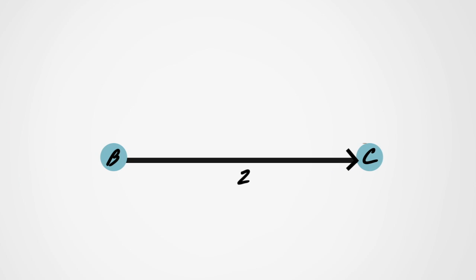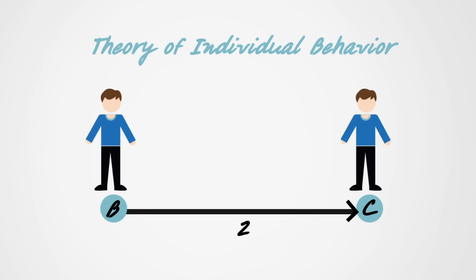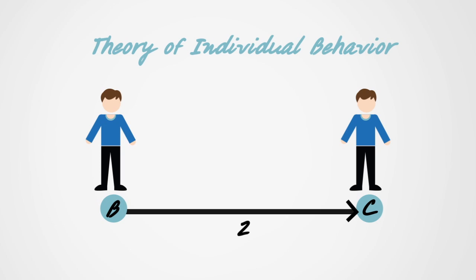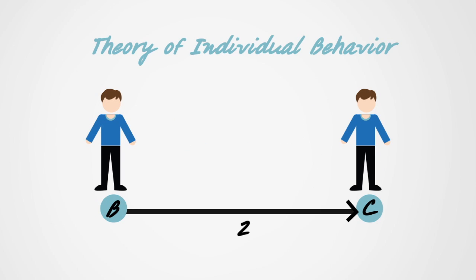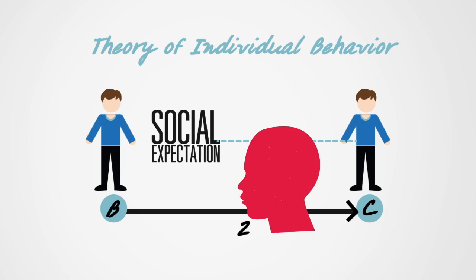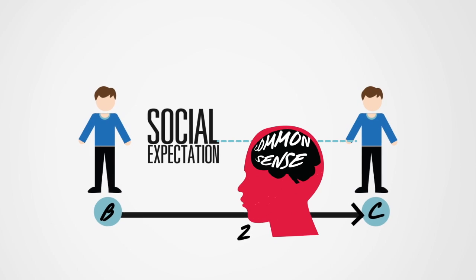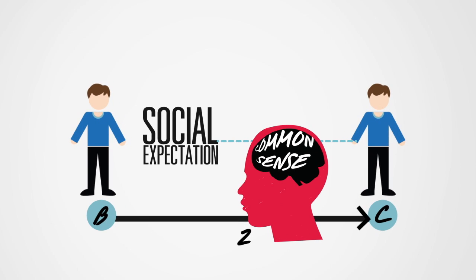The next step is arrow 2, which covers the theory of individual behavior. Do the changes in B have behavioral consequences, and if so, what are they? In the case of basic income, we can assume that changes in work-related incentives will affect the behavior of some individuals, but will changes in social expectations also have behavioral consequences? Here, sociologists can be helped by psychological theories and findings, but quite often they have to rely on their own common sense. The behavioral assumptions matter, but they can be empirically tested.